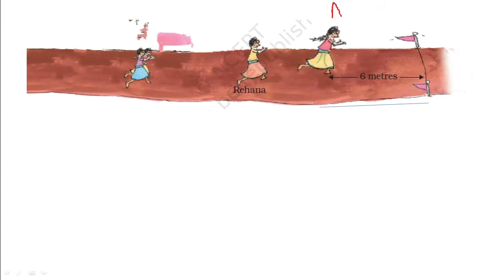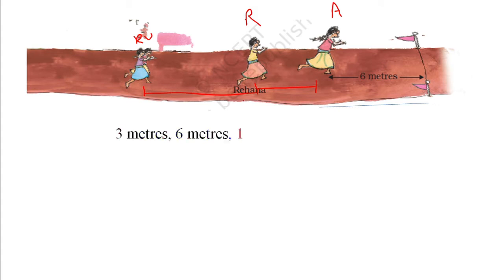In the picture, Arundhati is 6 meters away from the end line. Behind her is Rehana, then Konkana and Uma. We have to give our answers from: 3 meters, 6 meters, 10 meters, or 15 meters.